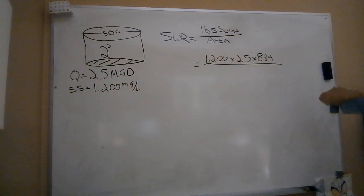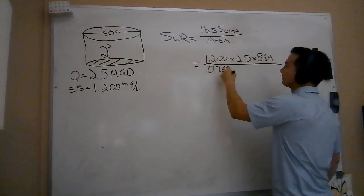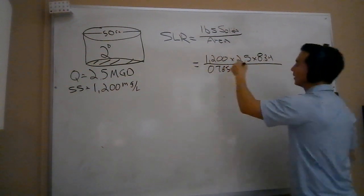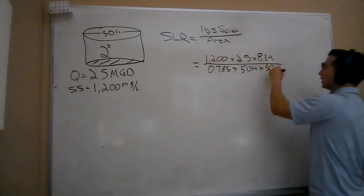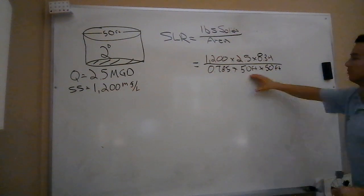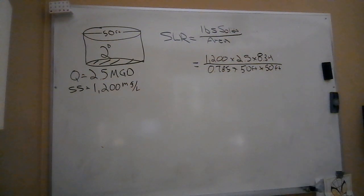Now I need to calculate the area of my clarifier. In water math, that's going to be 0.785 times my diameter squared - in this case, times my 50 feet times my 50 feet. This is the area available for solids to settle out. Let's run our handy dandy calculators here.